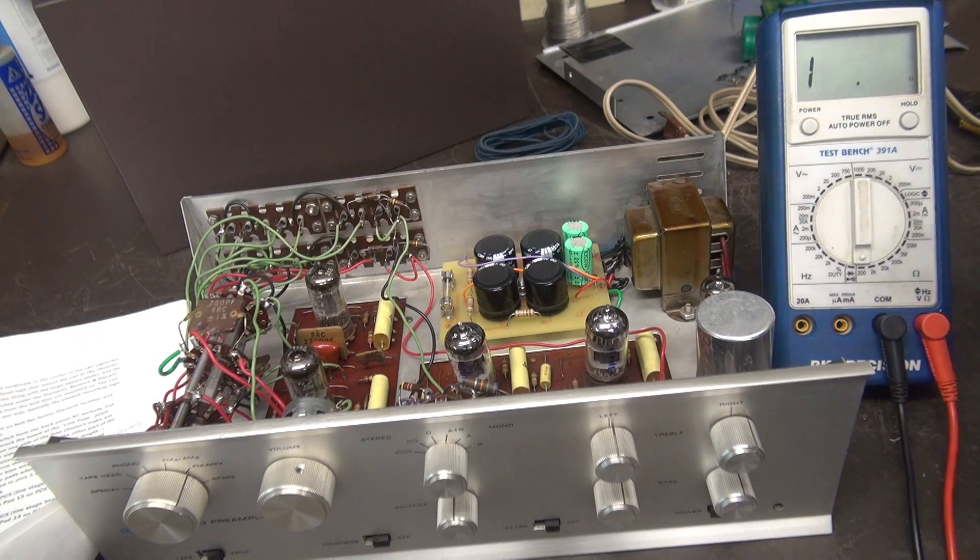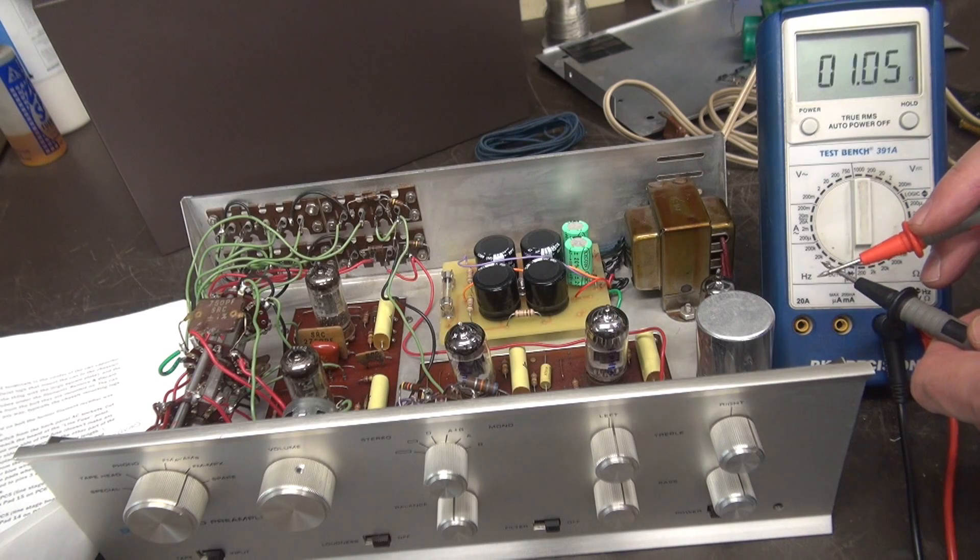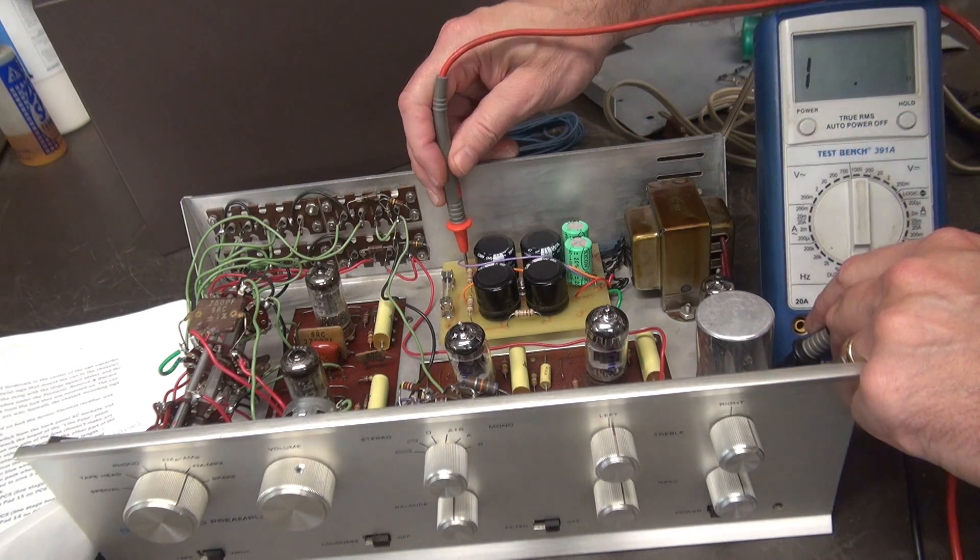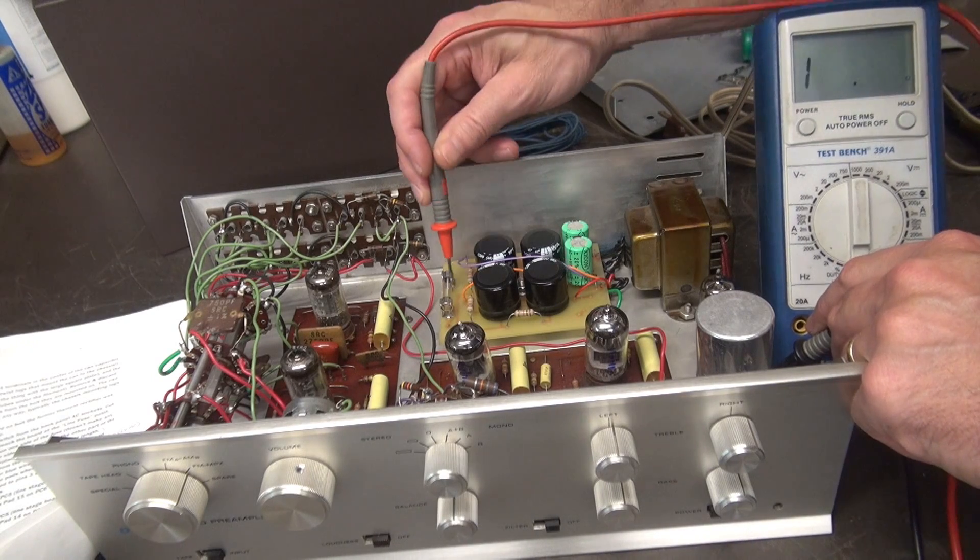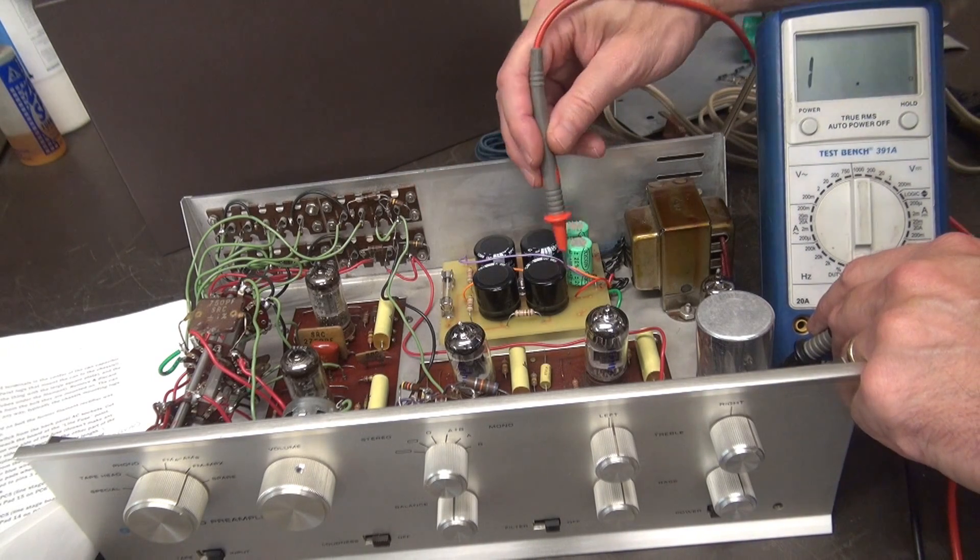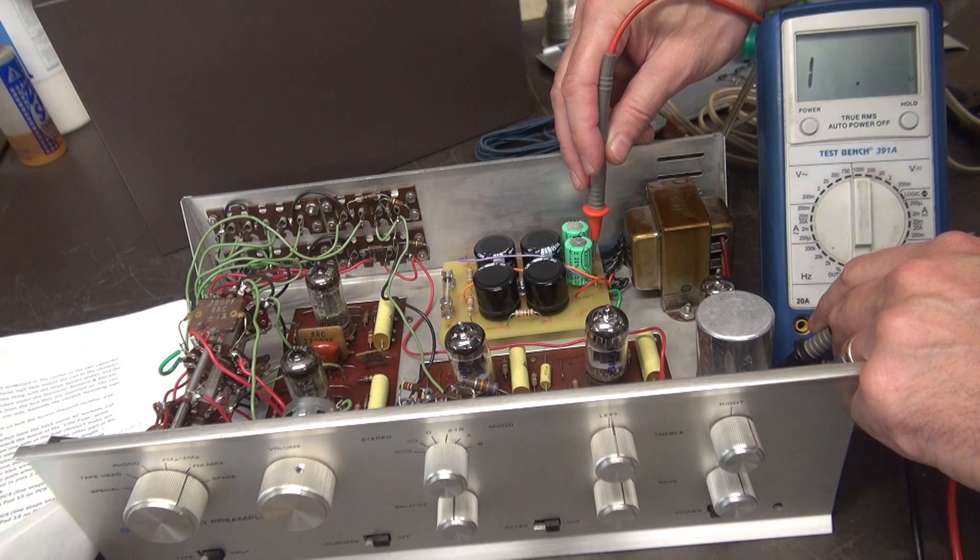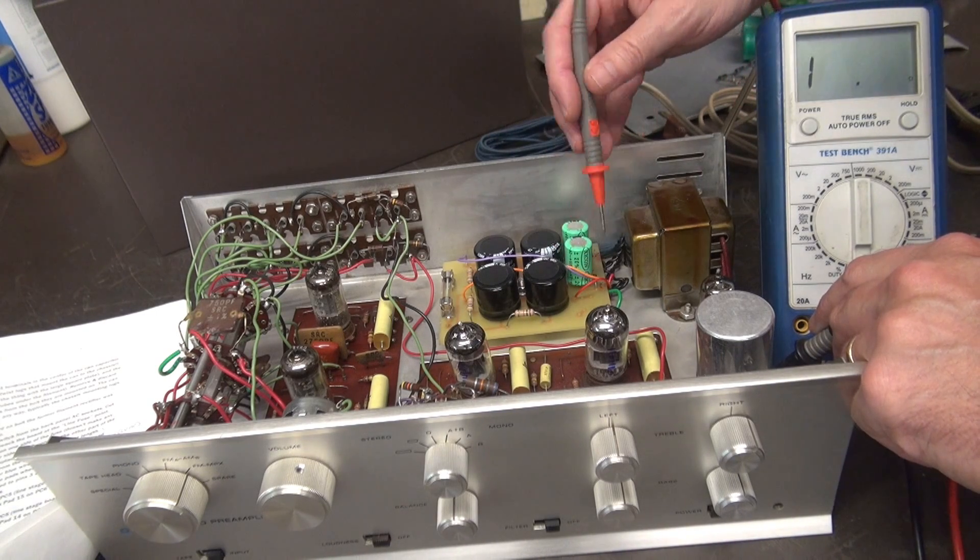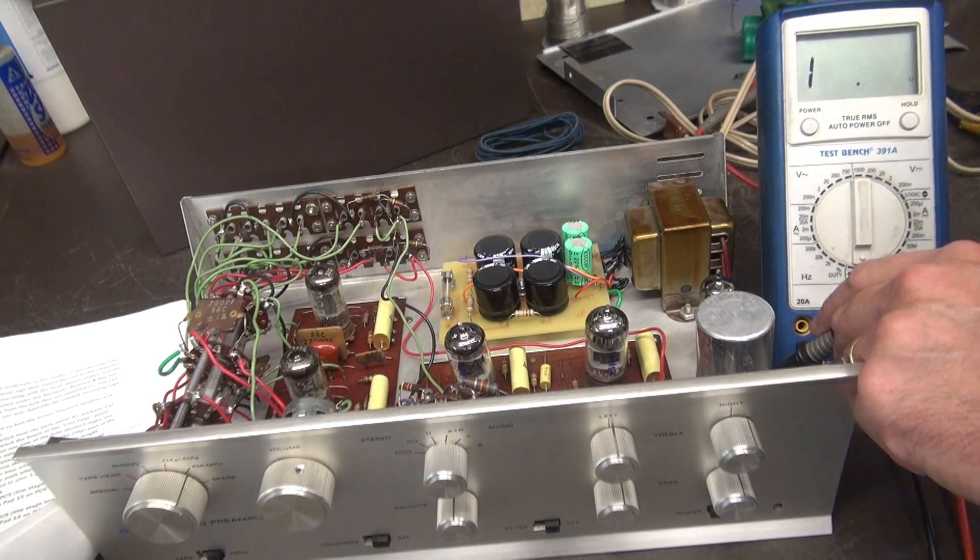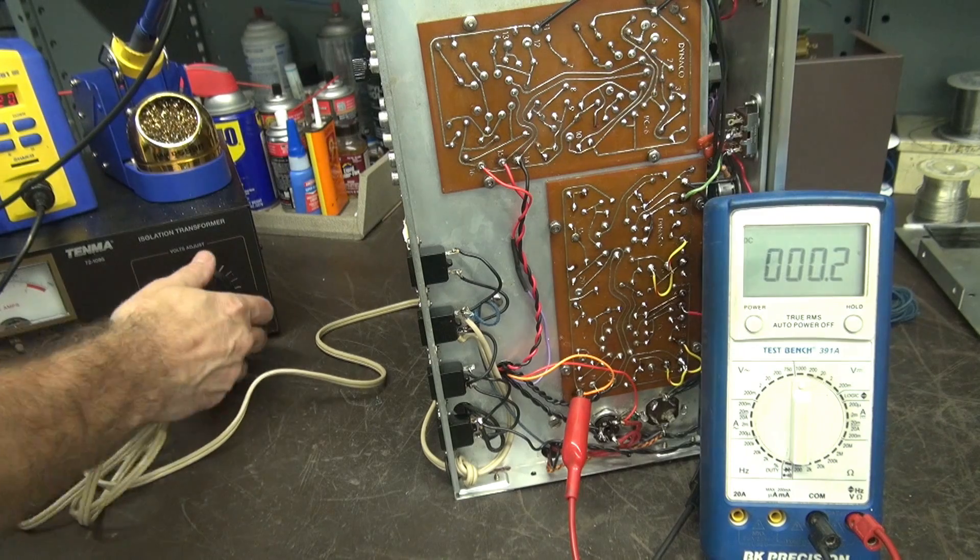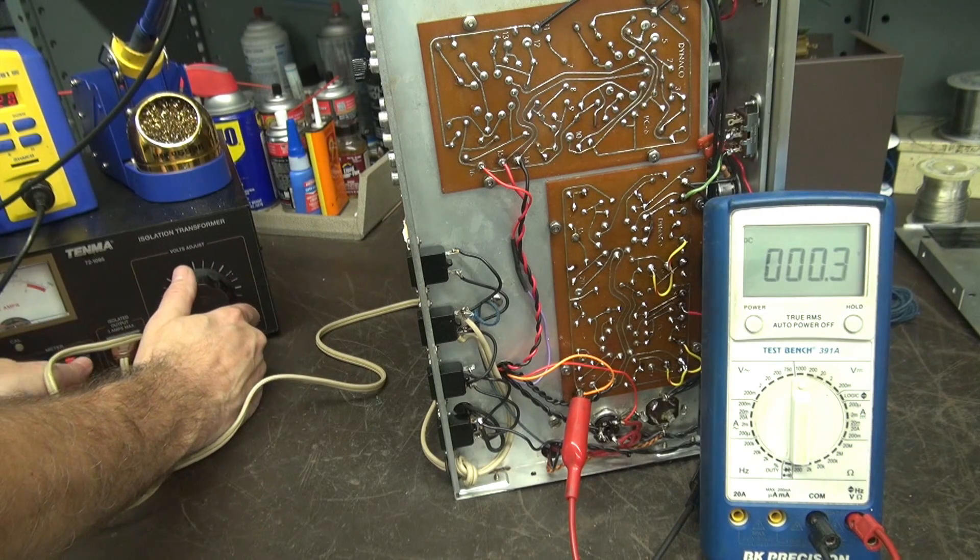So before you fire it up, grab your ohm meter. Make sure your leads are good. Go to ground. Buzz out those high voltage lines to ground. Make sure nothing got shorted. Same with the filaments. Want to make sure that nothing is shorted to ground before you power it up. Now that I've buzzed it out and I don't see any shorts, I'm going to bring her up slow on my variac.